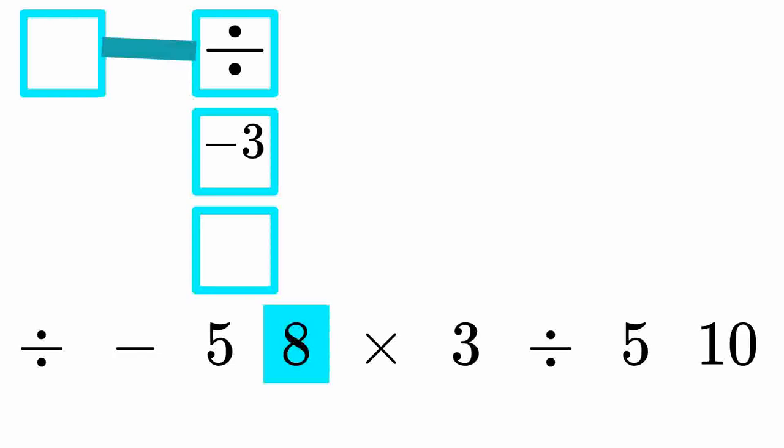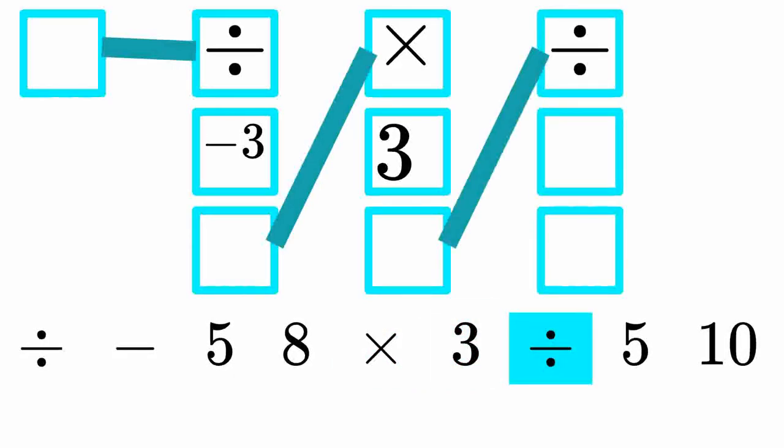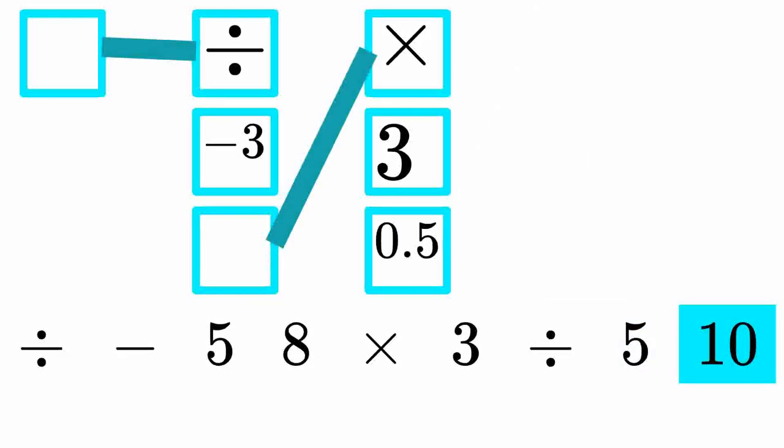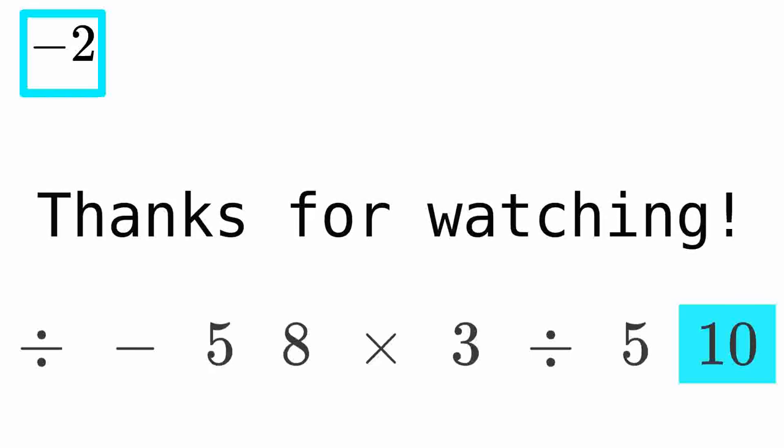To determine the second number, we need to multiply 3 and another number. We need to divide to get the second number. 5 and 10 divide to get 0.5. Next, we multiply 3 and 0.5 to get 1.5. Divide those two numbers to get negative 2, our end result. Thanks for watching!